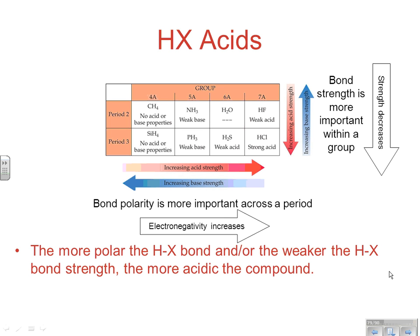If we're looking at just binary acids — HX acids — relatively simple binary acids, things with hydrogens on them: the more polar the H-X bond and/or the weaker the H-X bond strength, the more acidic the compound is going to be. If it's a very polar bond, that's going to expose the hydrogen and allow it to be more easily broken off and therefore ionize more. The more polar the bond or the weaker the bond strength is really the key to this.